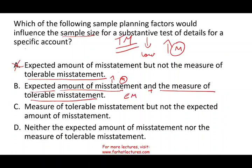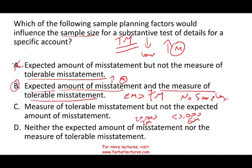If expected misstatement is greater than tolerable misstatement — say you expect $50,000 of misstatement but can only tolerate $20,000 — then don't sample at all, because you're going to reject it anyway. So both expected misstatement and tolerable misstatement influence sampling. Options C and D don't include both factors, so the answer is B. Make sure you know the relationship between expected misstatement and tolerable misstatement relative to sample size N and how they relate to each other.